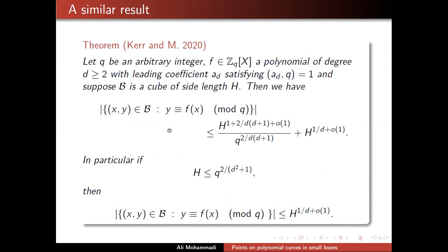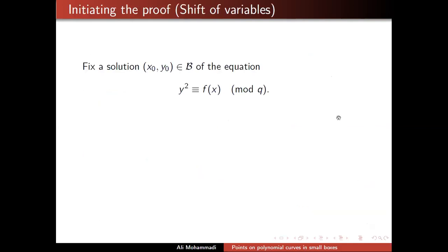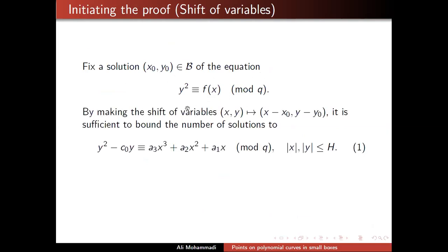We do things a bit more generally. In the previous slide we had y²≡f(x) with f(x) of degree three. There are other variations — the other variation in the paper is that as long as h is less than q^(2/(d²+1)) we get again the Bombieri-Pila bound. So it's a short proof; I'll try to quickly give you the idea. The first step is: we want the solutions coming from a symmetric convex body.